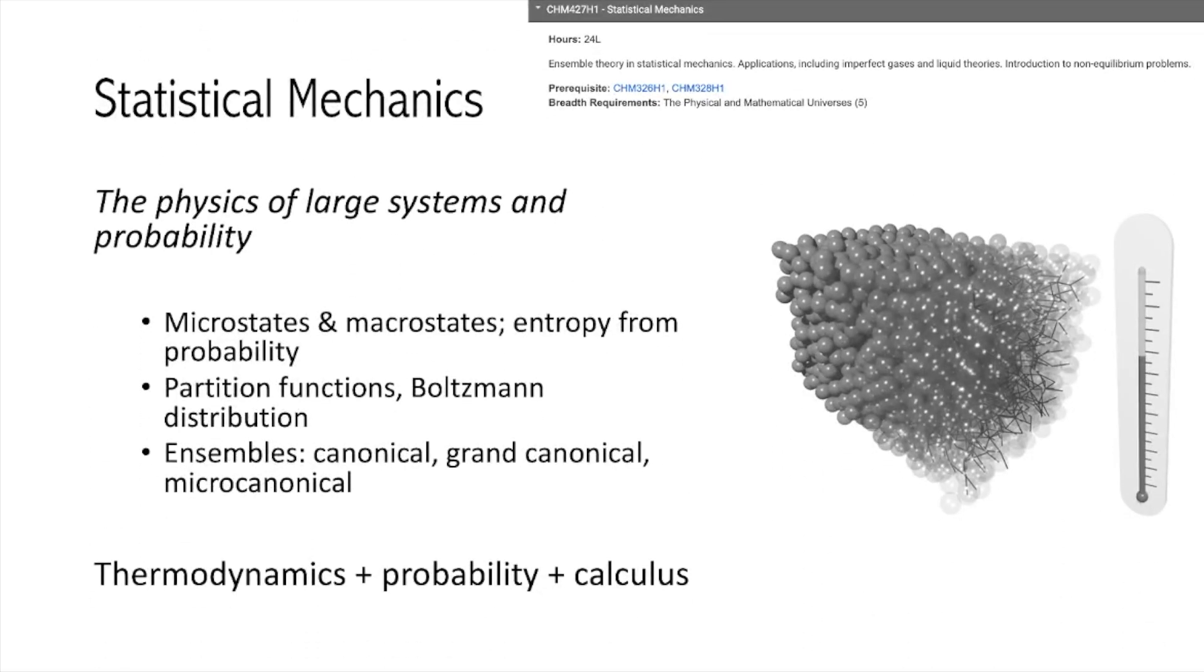Statistical mechanics studies systems with many particles. It uses probability and microstates to explain temperature, pressure, and entropy.